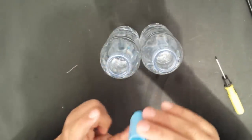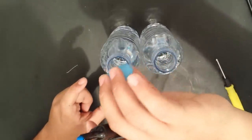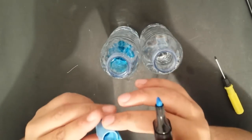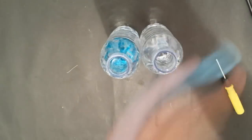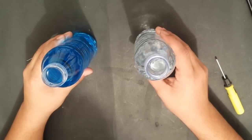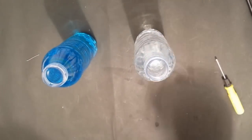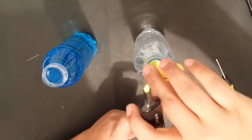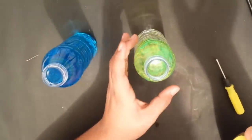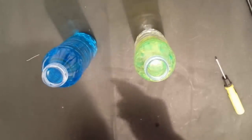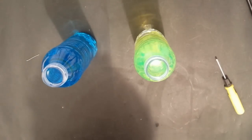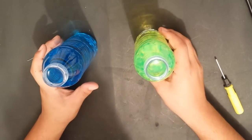All right guys, so there is some highlighter fluid in there. I will put that in place. I am going to need a lot more than this, so I will do some more. All right guys, so the first bottle is ready. I will be using yellow highlighter for the second. The yellow highlighter actually looks very nice while it's diffusing in the water.